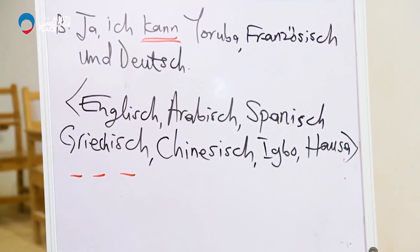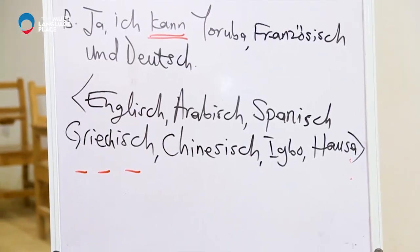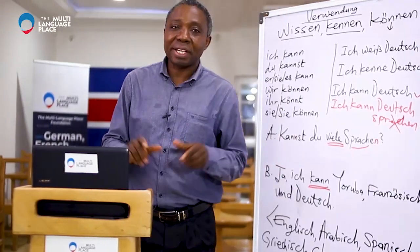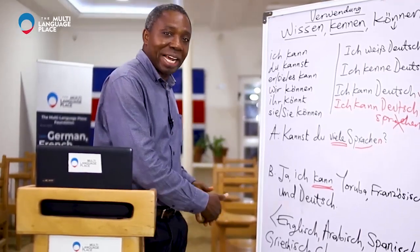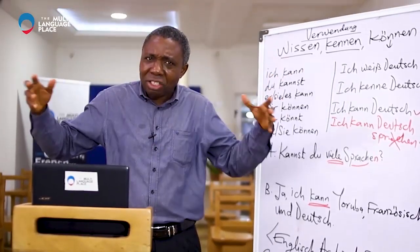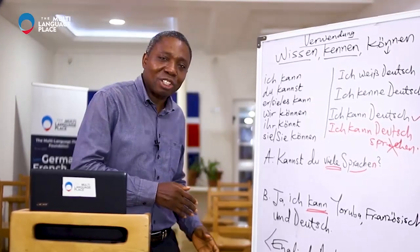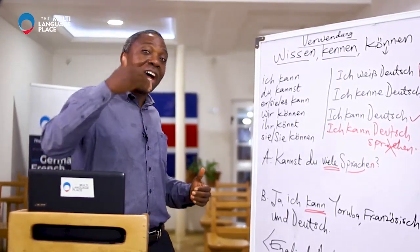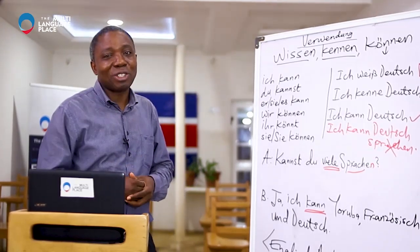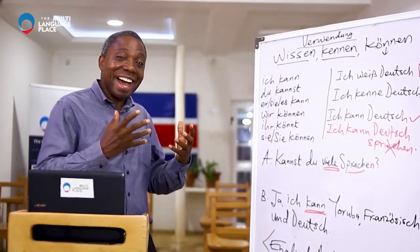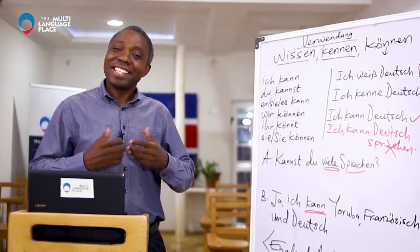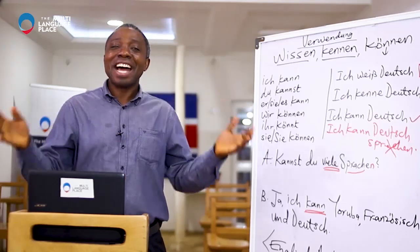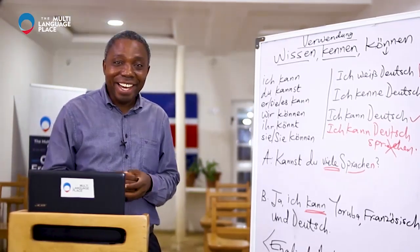I understand and I can speak Hausa language. I've put a space here for you — any language we have not mentioned, check it in your dictionary and write the languages you can speak. Just imagine you can speak them and write them there. Try to mention a minimum of five: 'Ja, ich kann Englisch. Ja, ich kann Französisch. Ja, ich kann Yoruba. Ja, ich kann Hausa. Ja, ich kann Griechisch.'